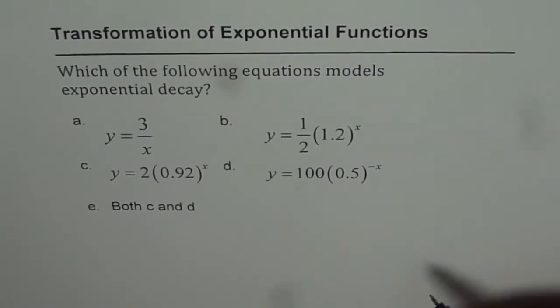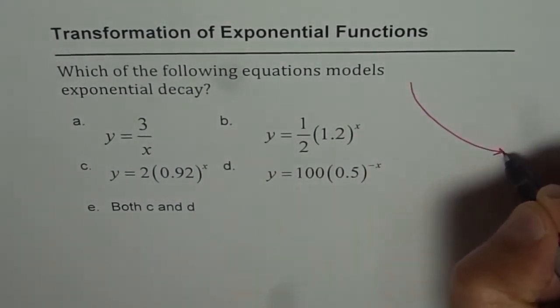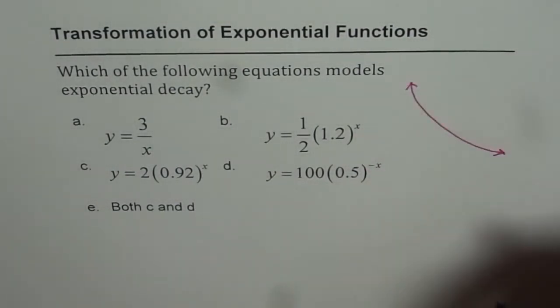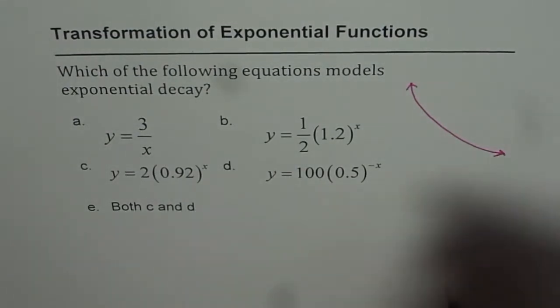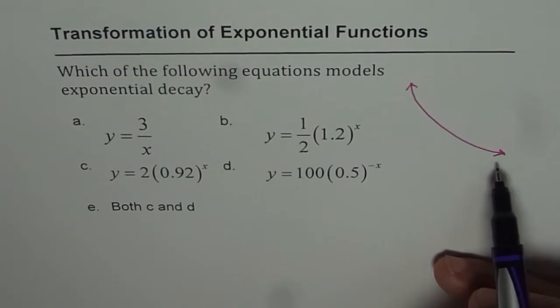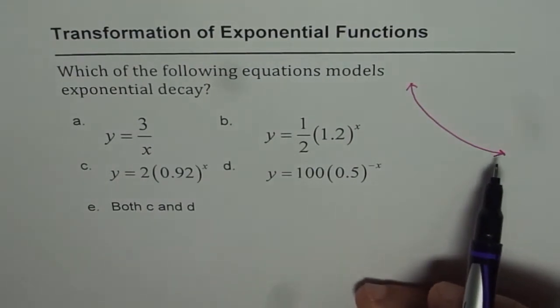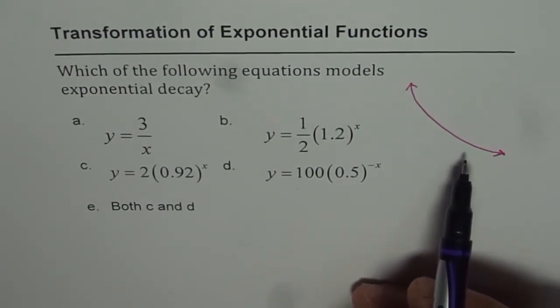So exponential decay will be for the function which is kind of going like this. So that is the graph of exponential decay for us. Now, that is possible if we are multiplying by increasingly lower numbers. That is what happens.